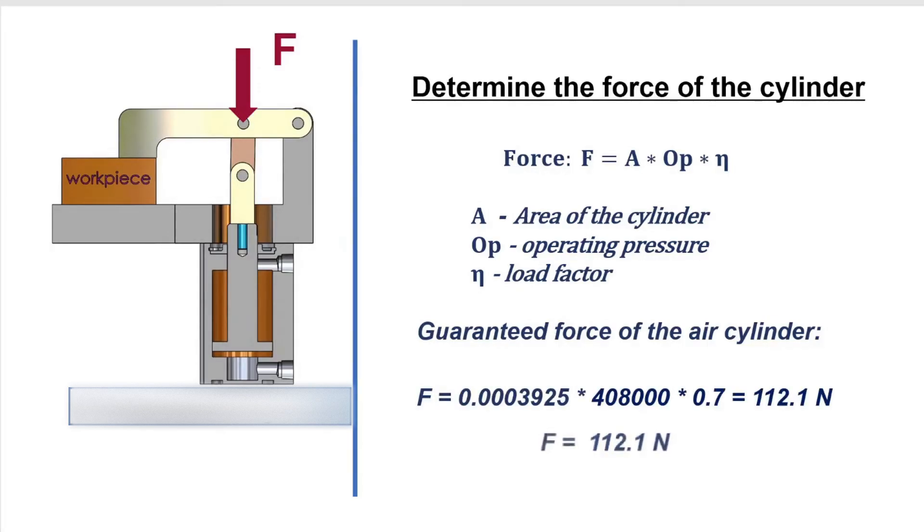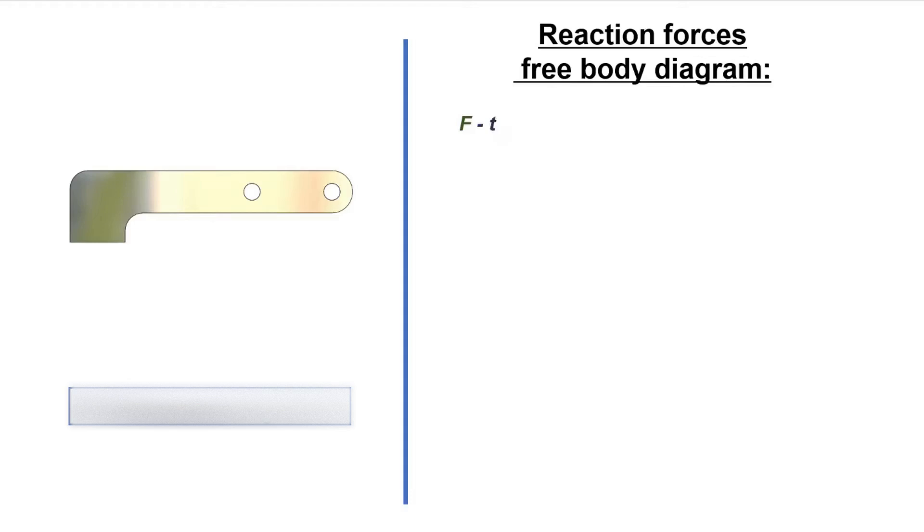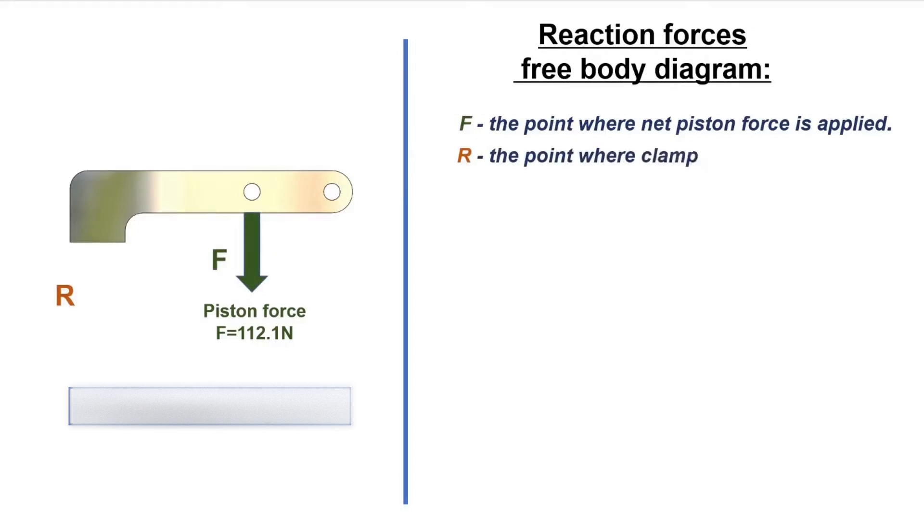By considering clamp lever as a rigid element with negligible mass, the forces acting on a rigid beam are: F, the point where net piston force is applied; R, the point where clamping force is applied; and O, the pivot point.